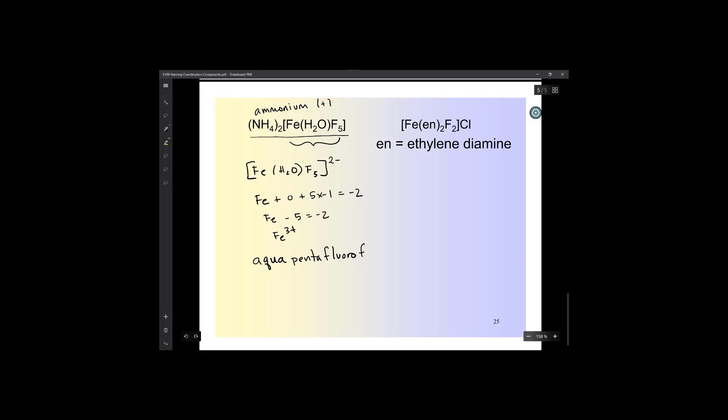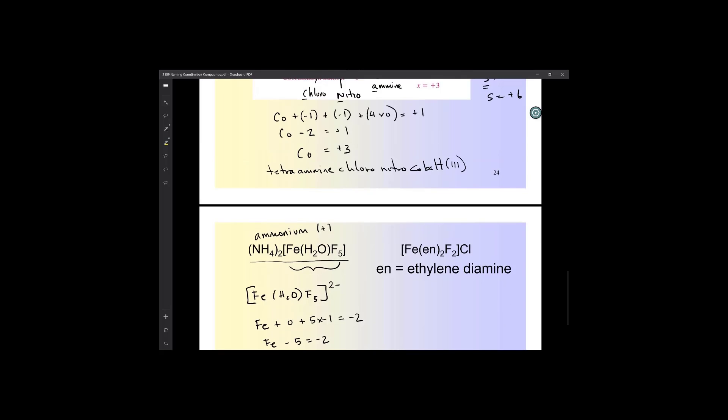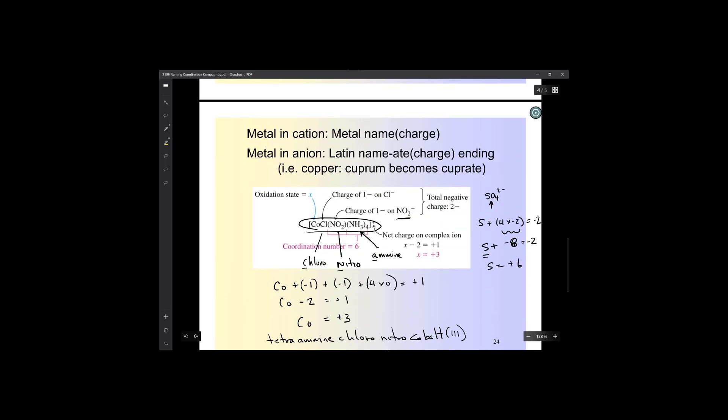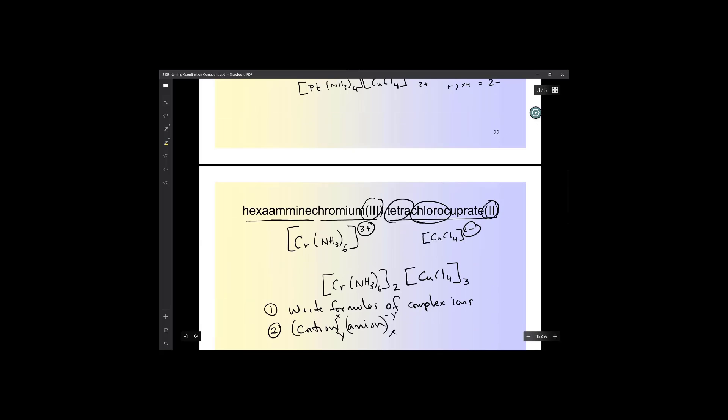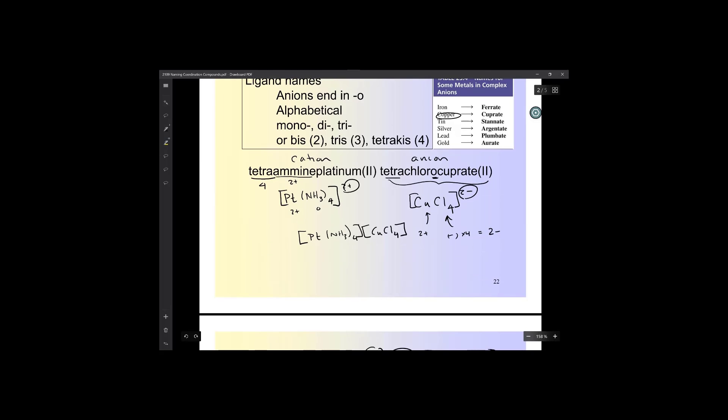And then you have to put the charge. And again, we can skip up to here on this earlier slide, and it shows that the name for iron in an anion would be ferrate.